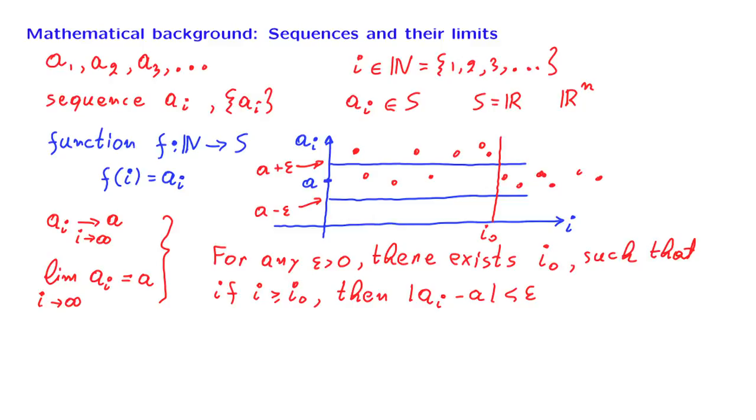Convergence of sequences has some very nice properties that you're probably familiar with. For example, if I tell you that a certain sequence converges to a number a and another sequence converges to a number b, then we will have that a_i plus b_i, which is a new sequence, the i-th element of the sequence is this sum, will converge to a plus b. Or similarly, a_i times b_i, which is another sequence, converges to a times b.